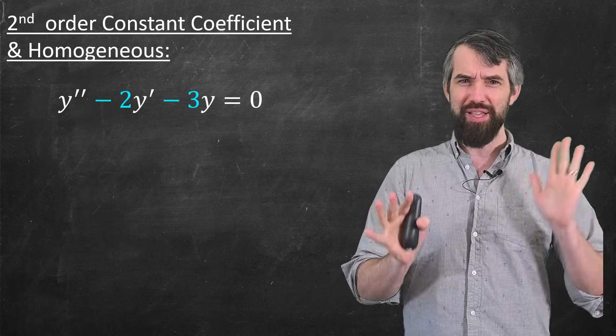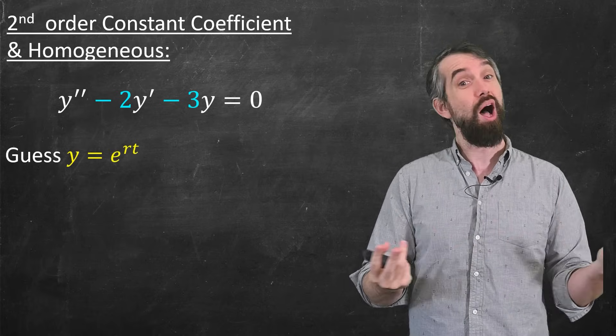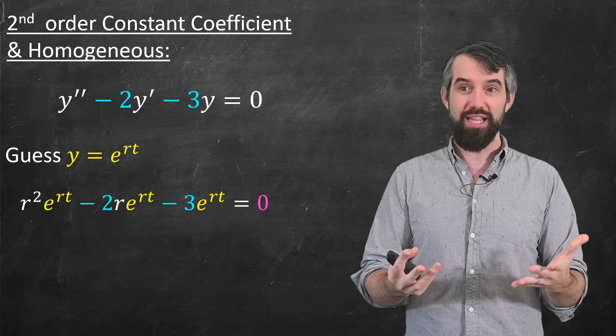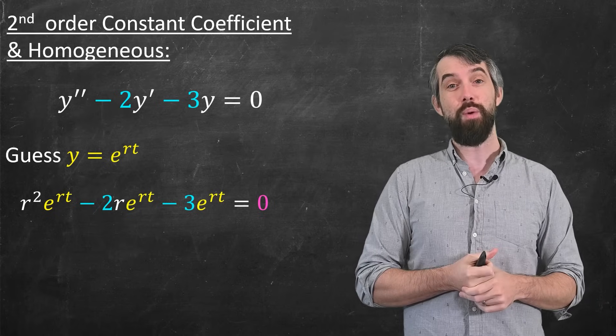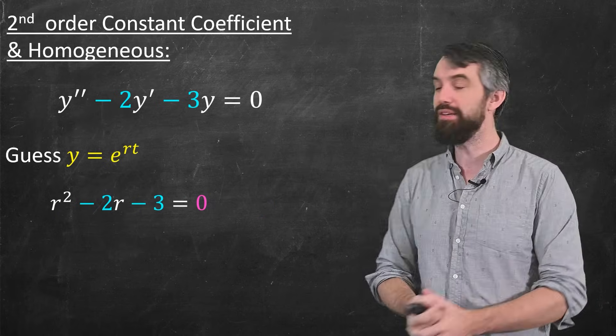There's no term here that doesn't depend on y. So you basically have to know this methodology because it's core to so much. The basic trick is to guess y is e to the rt. If you plug this in, you get a bunch of e to the rts everywhere. They all cancel.